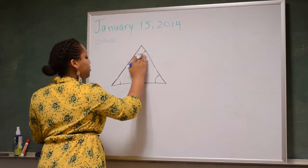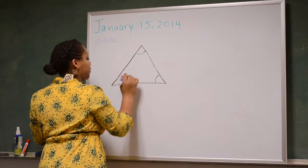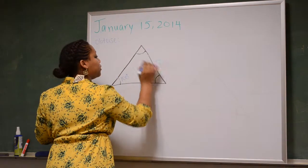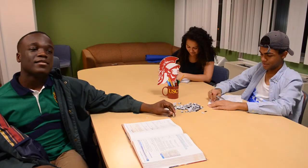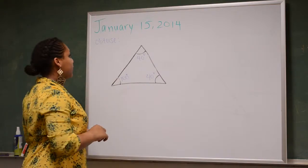So, an example of an obtuse triangle. For example, we have 100 degrees, 40 degrees, 40 degrees. An example of an obtuse triangle. These two angles are the same. It's also an obtuse triangle.